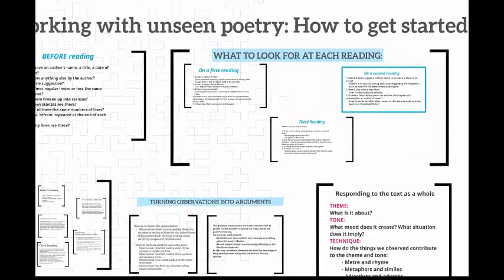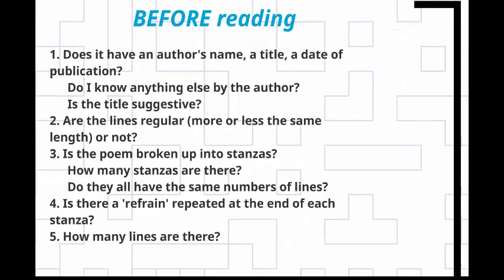What can we find out about a poem before we read it? If we look at the poem on the page we will see the author's name, a title, and possibly a date of publication. This might give us useful clues. We might know the author or another poem by him or her. The title might suggest the theme or tone the poem is going to take, and the date will also allow us to think about comparable poems and may be significant historically.